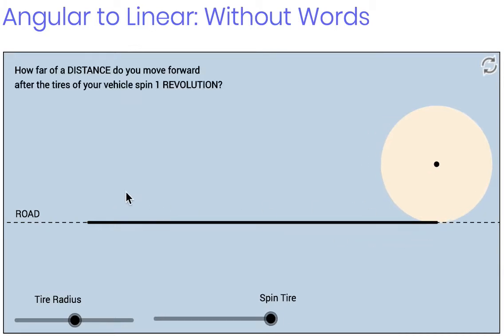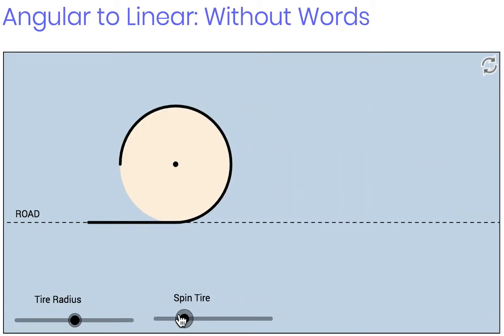When the wheels of my tire spin once, I actually move forward a distance equal to the circumference of that tire.